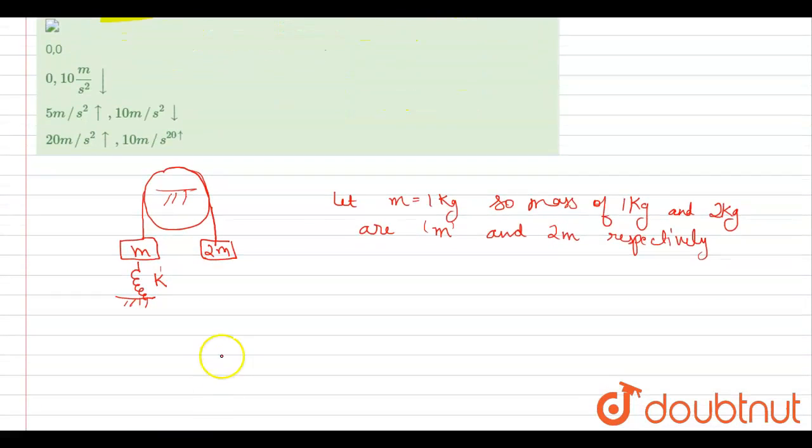And if we draw the diagram in detail, here is 2m and the tension on this acting upward direction is capital T. The value of capital T is equal to 2mg and its weight is 2mg. On small m, the tension is equal to mg plus kx.